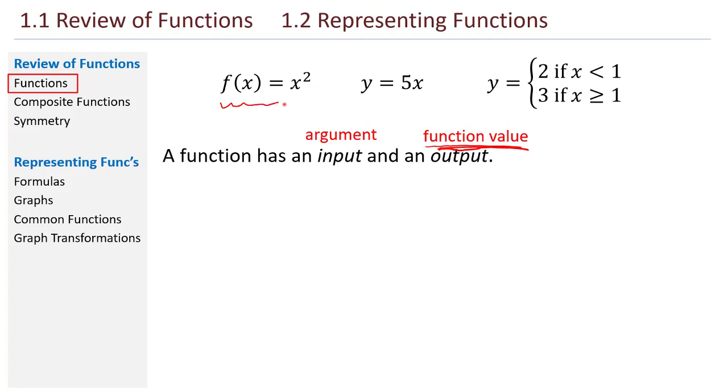Functions can be written using this functional notation, f. In this case, your input is x, and the output is x squared. So if I put in 5, the result is 25. I could write a function as a relation of two variables. In this case, y is a function of x. And I can even split up my argument. So if the input is less than 1, I have a certain output, and my output will be 2. And if the input is greater than or equal to 1, then the output will be 3. This is called a piecewise defined function.